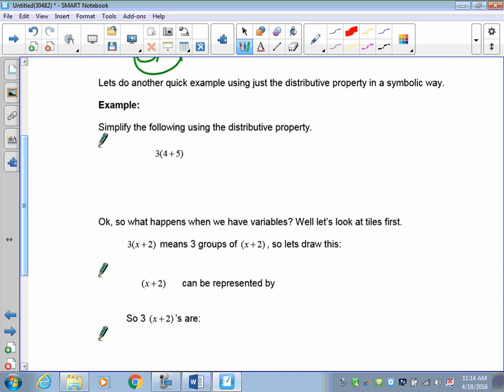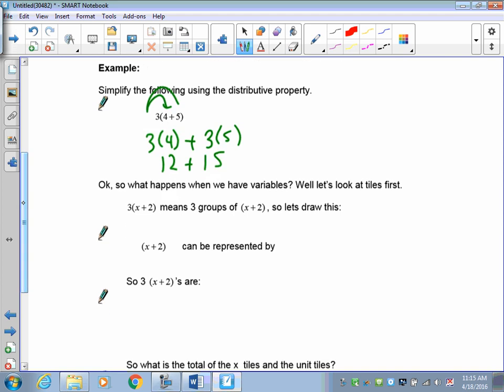So I've got 3 onto 4 plus 5. Don't worry, we'll put variables in here in a moment. This means 3 times 4 plus 3 times 5. So 3 times 4 is 12, 3 times 5 is 15. And as you see, if you put the 4 and the 5 together, that's a 9, and 3 times 9 is 27, and so is 12 plus 15 being 27.